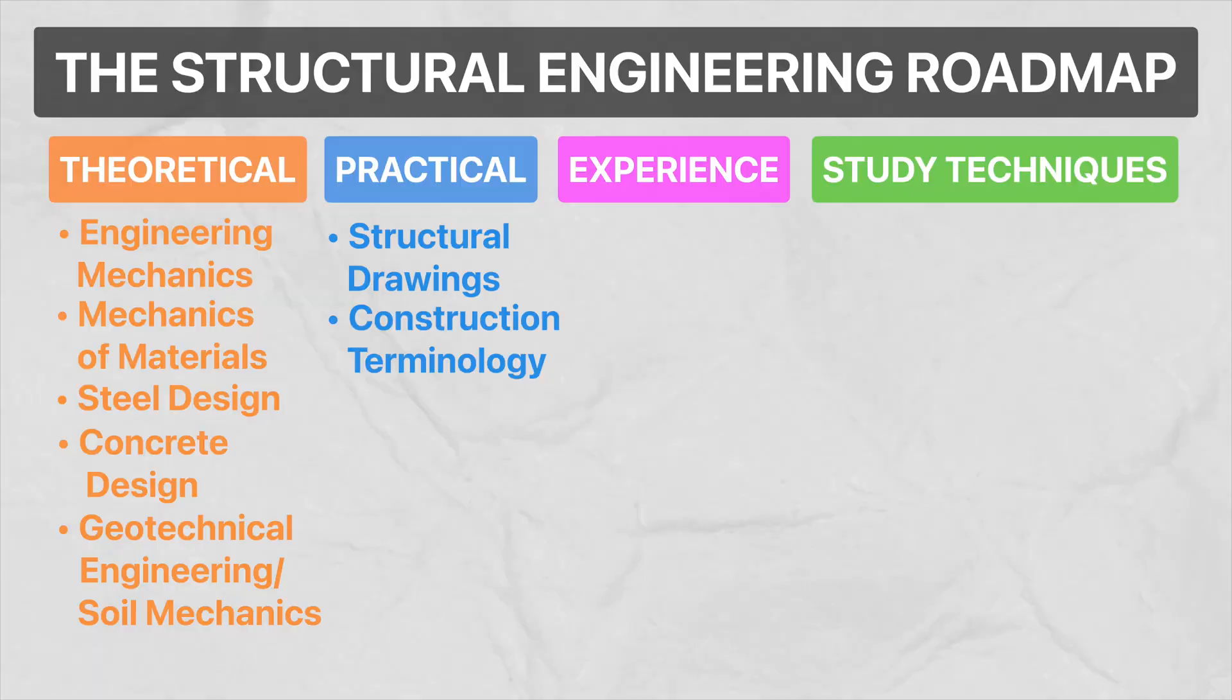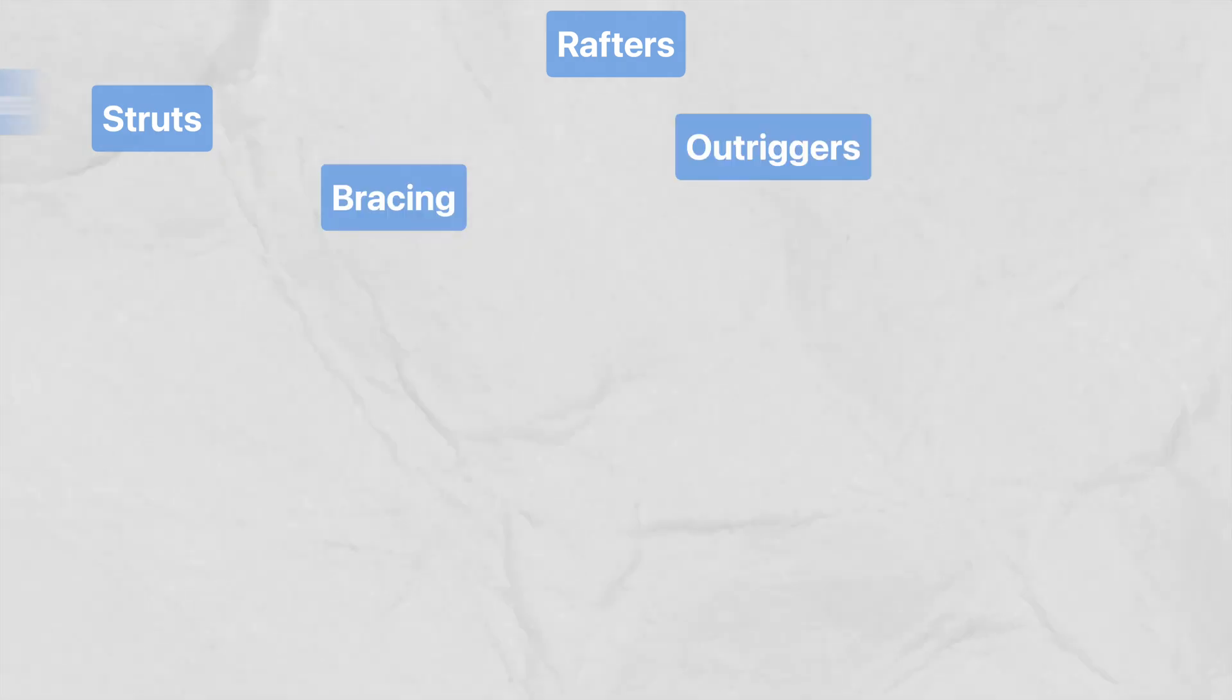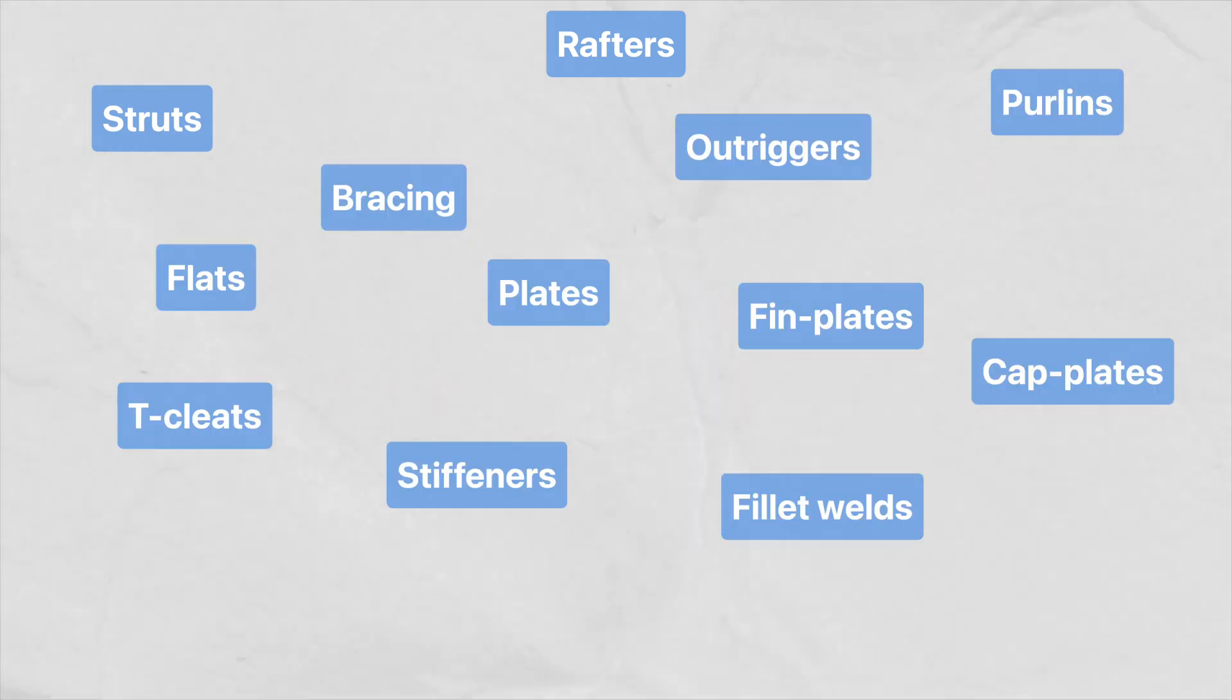Okay, and next on the list is construction terminology. And what I mean here is learning the names of as many different things that are used in construction as possible. For example, a few of the building components that you'll need to be familiar with if you're working in steel construction are rafters, struts, bracing, outriggers, purlins, flats, plates, fin plates, cap plates, tee cleats, stiffeners, fillet welds, butt welds, and bolt sizes. Okay, that was a bit of a joke, but I think you get my point. There's a lot of different things that you need to learn the name of in construction, and by simply turning up to class, you're not going to learn those things. So what I would suggest doing is getting on Google and searching up annotated diagrams of timber, concrete, and steel construction, and trying to commit as many of those names to your memory as possible. One of the most overwhelming things as a graduate engineer is when people are constantly talking about things that you have no idea about, so this is one of those processes that will definitely pay off big time.